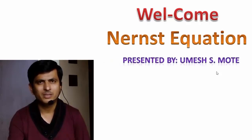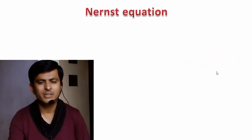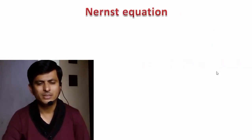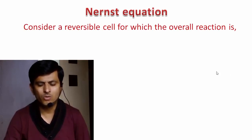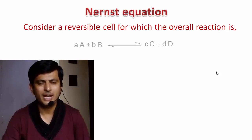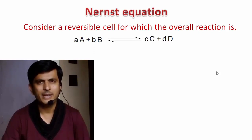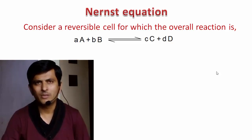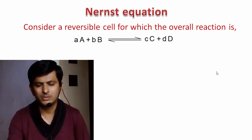Cell potential is nothing but the difference of potential between two electrodes. For deriving the Nernst equation, consider a reversible cell for which the overall reaction is aA + bB → cC + dD, where a, b, c, and d represent the number of moles of the respective components.